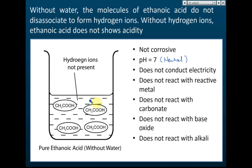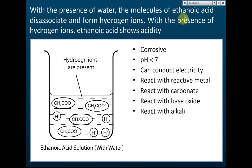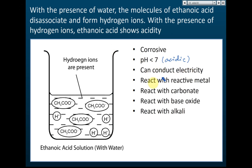Without water, it won't ionize to form hydrogen ions and will not show acidity. But with the presence of water, the molecules of ethanoic acid dissociate and form hydrogen ions, and with the presence of hydrogen ions, ethanoic acid shows acidity. The molecules will ionize and dissociate to form ethanoate ions and hydrogen ions. It becomes corrosive, the pH becomes less than 7 — meaning acidic — it can conduct electricity, react with reactive metals, carbonates, base oxides, and alkalis.